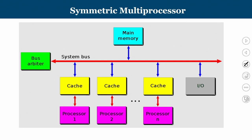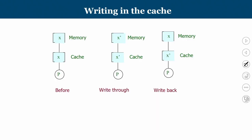Consider the case of a symmetric multiprocessor design where we have many processors 1, 2, up to n. They have their own cache memories and there is a common system bus through which the shared main memory is accessed. Who accesses the bus is determined by the bus arbiter.